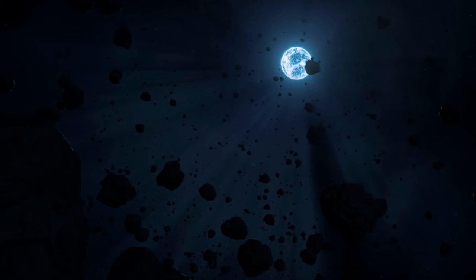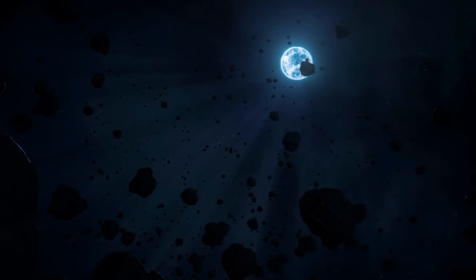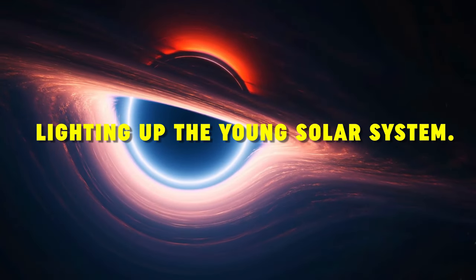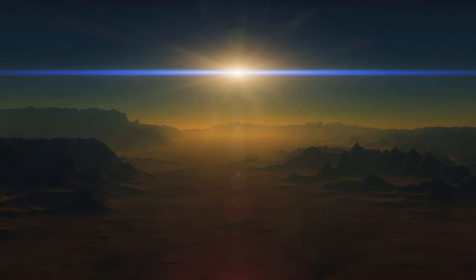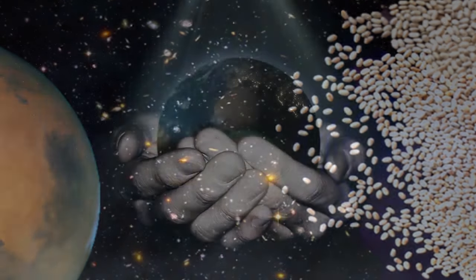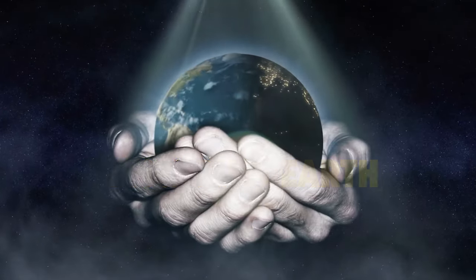The fusion process, beginning with the conversion of hydrogen into helium, released immense amounts of energy, lighting up the young solar system. The remaining material in the protoplanetary disk, now orbiting the nascent Sun, did not remain idle. Within this disk, the seeds of the planets, including Earth, were taking shape.